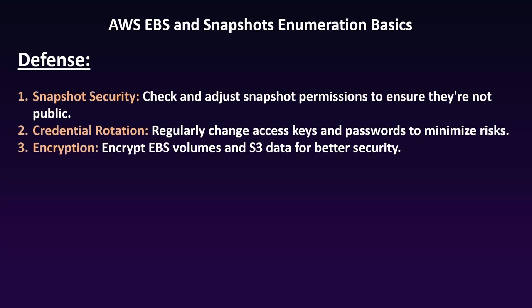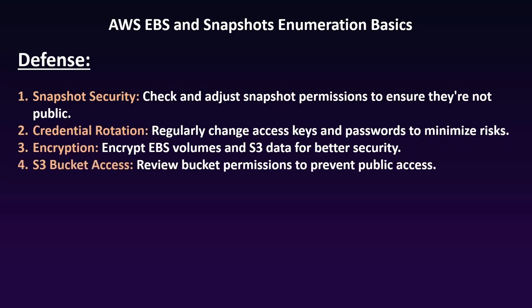Next up is encryption. We saw that the EBS volume and snapshot were not encrypted. Data encryption is a critical component of AWS security. You can encrypt EBS volumes using AWS Key Management Service (KMS), choosing between server-side encryption with KMS keys or customer-managed keys. Also ensure that S3 data is encrypted.